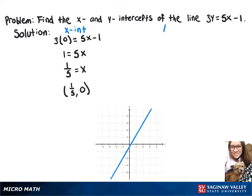Now with our y-intercept, we're going to sub 0 in for x. So we'll get 3y equals 5 times 0 minus 1.